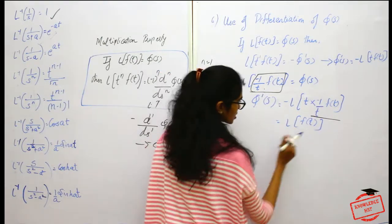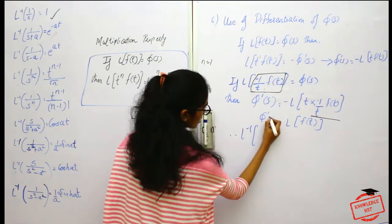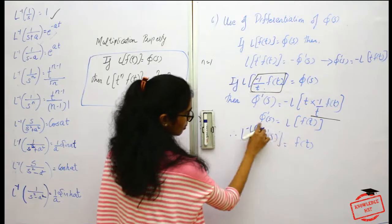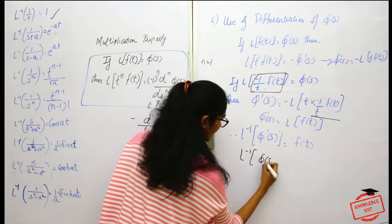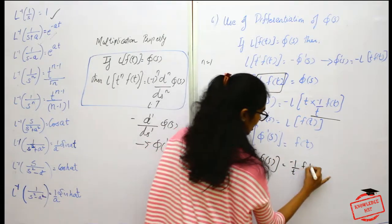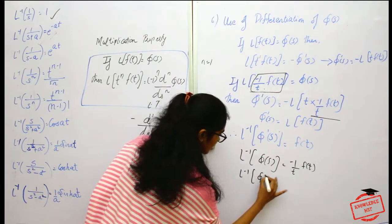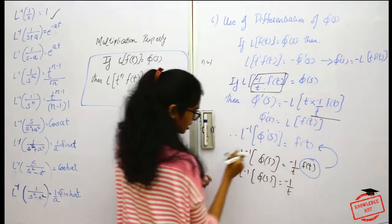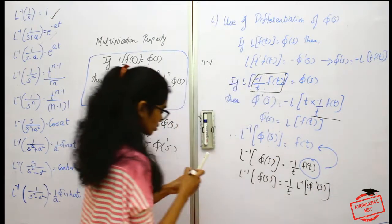Therefore, L⁻¹{φ'(s)} = f(t), and similarly L⁻¹{φ(s)} = (−1/t)·f(t), where f(t) = L⁻¹{φ'(s)}. This is the main property.